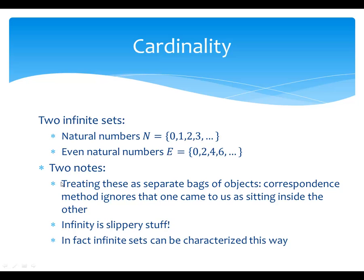One of the things that's going on — I don't want to talk about it too technically — is that the one-to-one correspondence method doesn't remember that we got E as a subset of N. It kind of thinks of it on its own terms, as separate bags of objects. Here are the natural numbers and here are the even numbers in separate bags. We don't have to tell it that the way I got E was I started with N and threw stuff away.